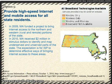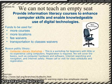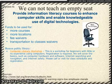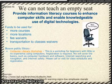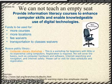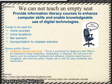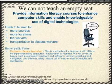Option 6 addresses the need to provide information literacy courses to enhance computer skills and enable knowledgeable use of digital technologies. We suggest funds be used for creating more courses, creating more locations for those courses, providing fee waivers for registration, and providing transportation waivers. A great example of courses currently offered is a computer literacy workshop provided by the Boston Public Library, which could serve as a model for what and how to provide to people in need.